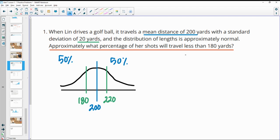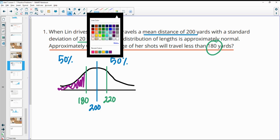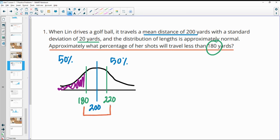And then this wants to know what percentage of her shots will be less than 180. So we're trying to figure out how much is going to be over here. When you're looking at within one standard deviation of the mean, the amount of data within this interval from 180 to 220 is 68%. And if you split that in half, that means there's 34% on this half and 34% here.